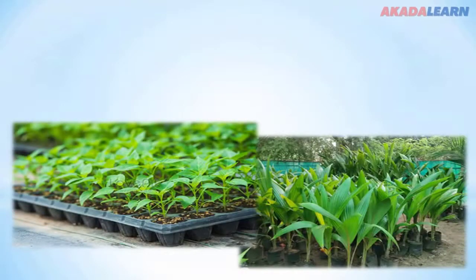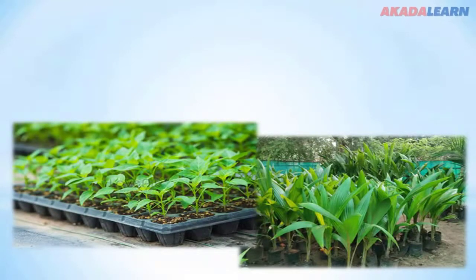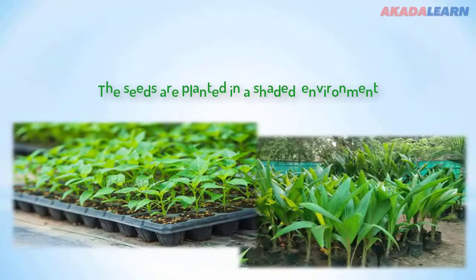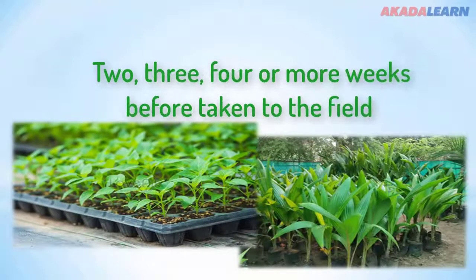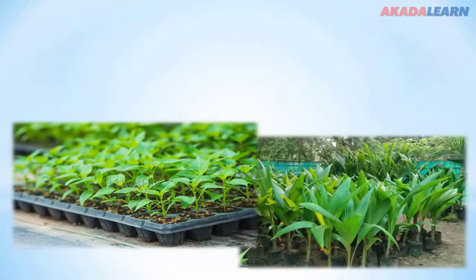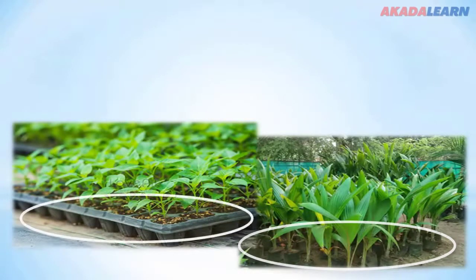The second method is the nursery method. In the nursery method, the seeds are planted in a shaded environment and are taken care of for about two, three, four, or more weeks before being taken directly to the field. From the picture here, you can see these plants are not planted directly in the field but are planted either in a polythene bag or in a container where they are taken care of.